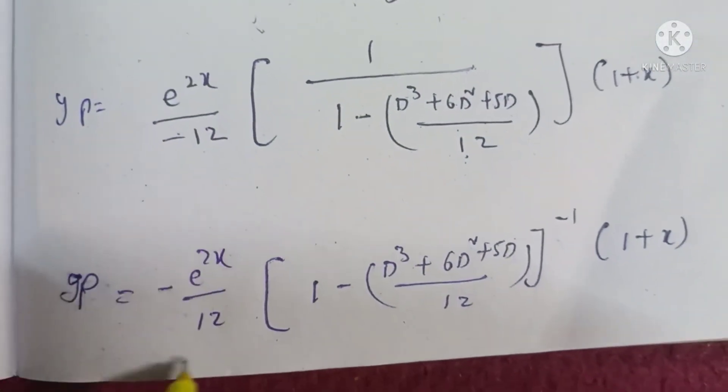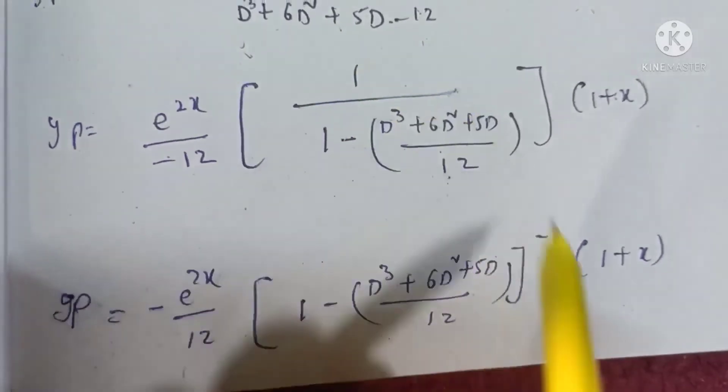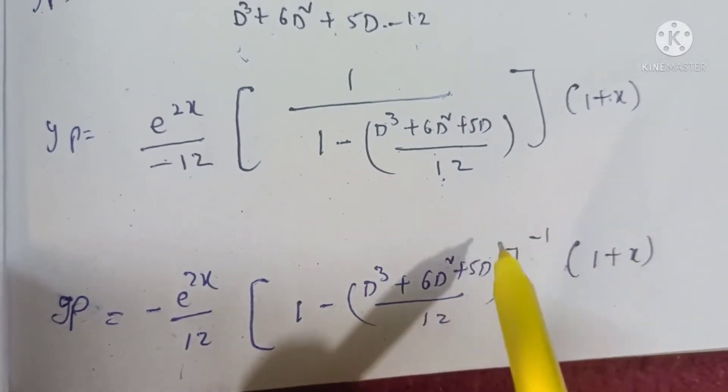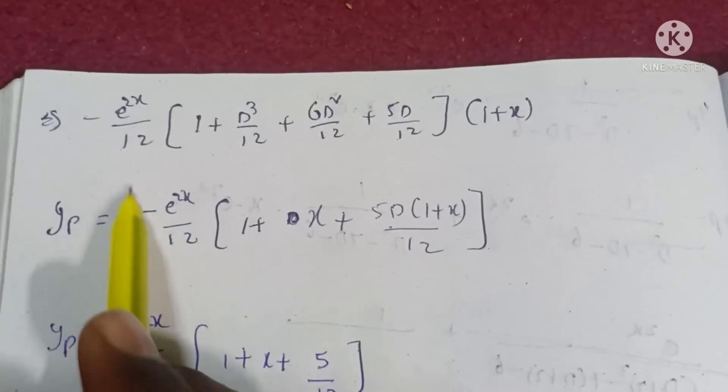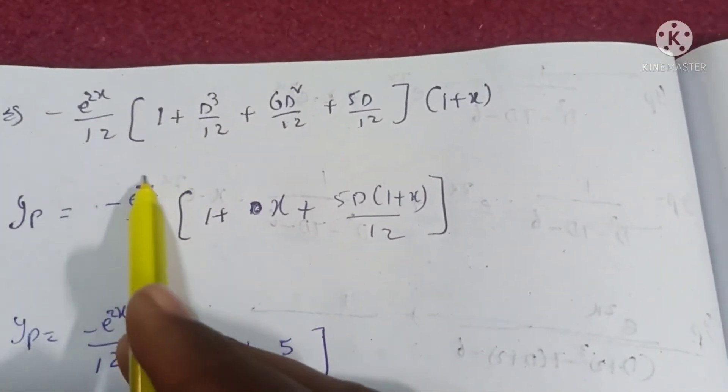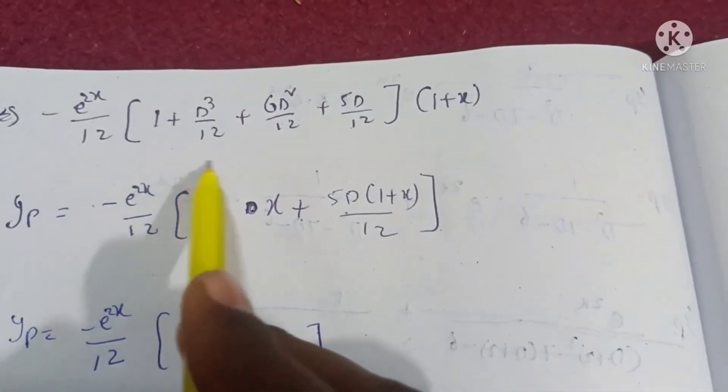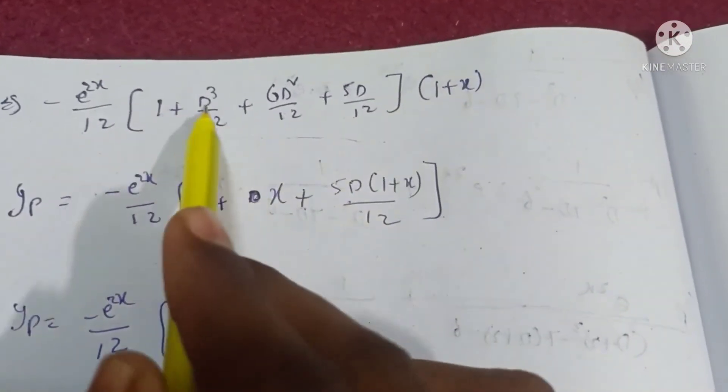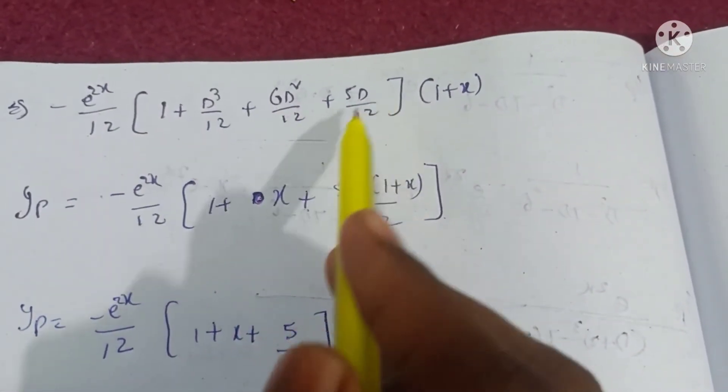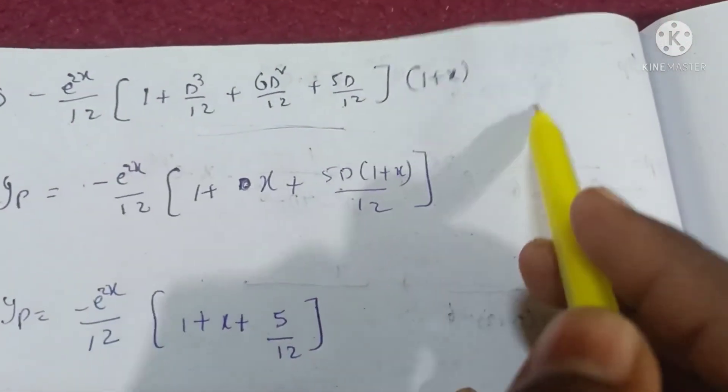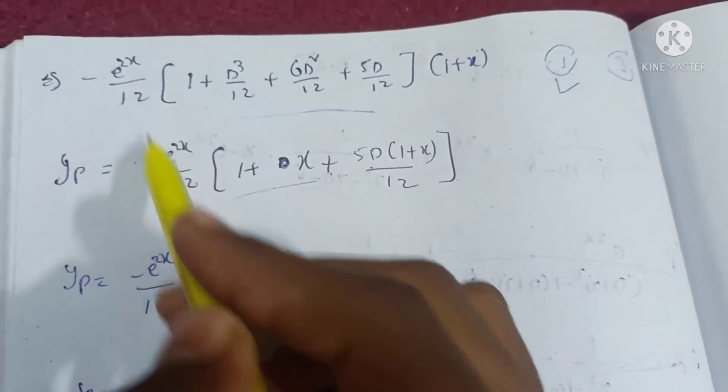Therefore, yp = -e^(2x)/12 × 1/(1 - (D³ + 6D² + 5D)/12) × (1 + x). This gives -e^(2x)/12 times the inverse of (1 + x). So yp = -e^(2x)/12 × [1 + (D³ + 6D² + 5D)/12]^(-1) × (1 + x).